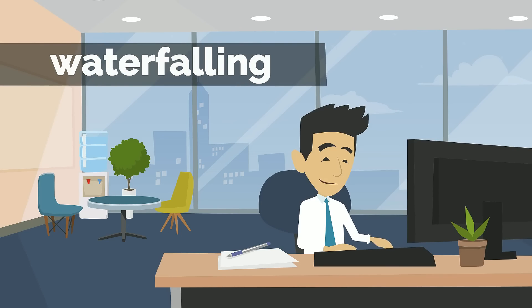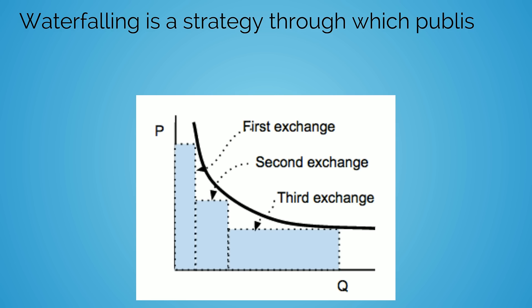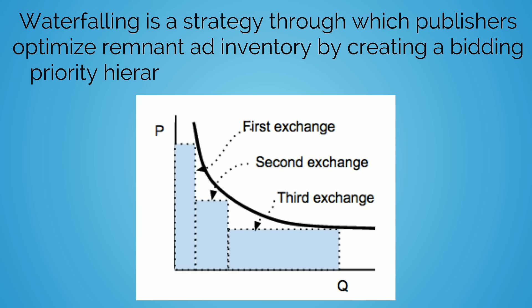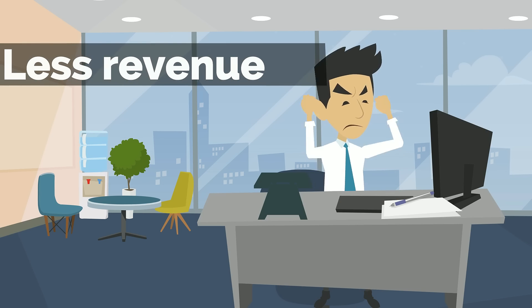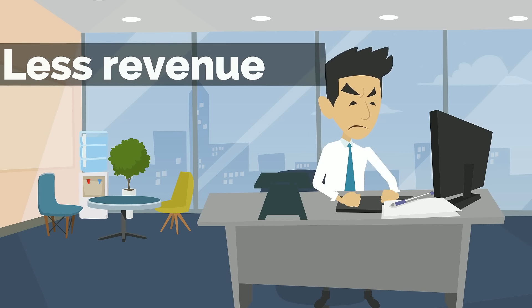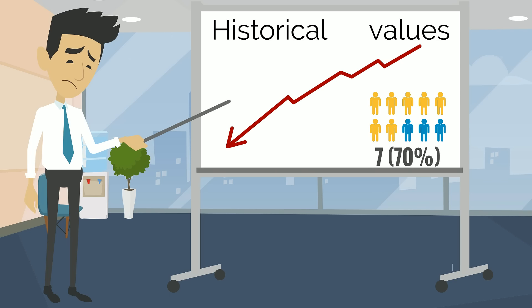Until recently, the preferred technique publishers used to optimize ad stacks was waterfalling. Waterfalling is a strategy through which publishers optimize remnant ad inventory by creating a bidding priority hierarchy amongst different ad networks. Unfortunately, waterfalling is less than optimal for revenue yield because the rates publishers update daily are based upon historical values.